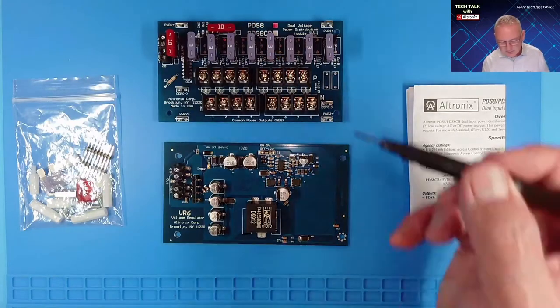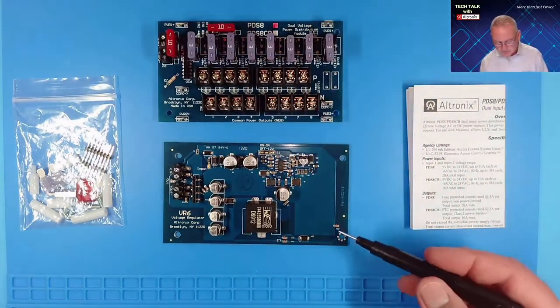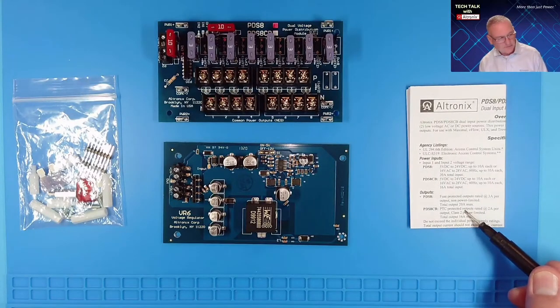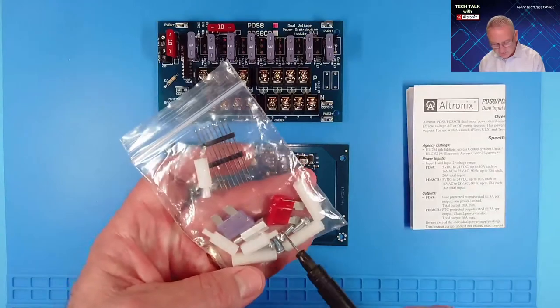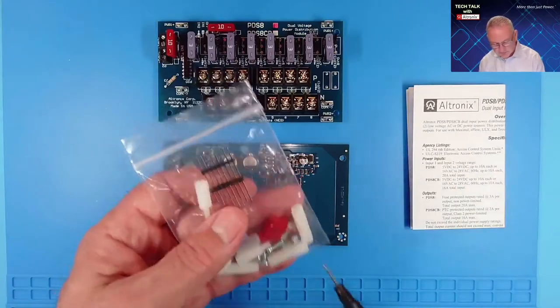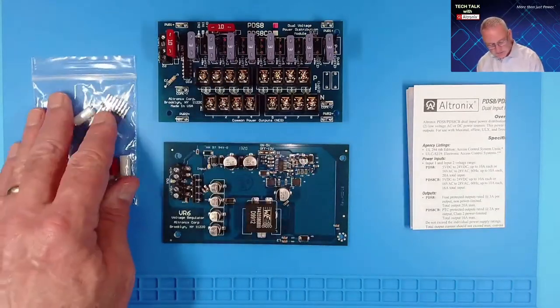we'll find the PDS-8 power distribution board, the VR6 voltage regulator, a set of installation instructions, an accessory package which has spacers, 632 machine screws, spare fuses, and an 8-pin header connector.